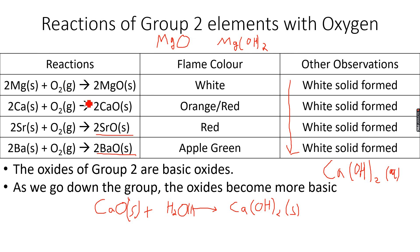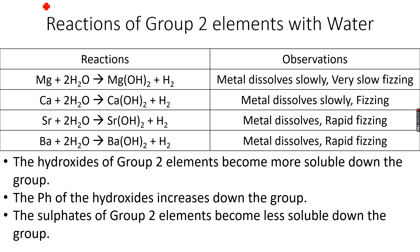All of these reactions with oxygen are exothermic combustion reactions, and the energy released increases down the group. This is because the reactivity of group 2 elements increases down the group. Barium is so reactive that it cannot be kept openly in air — it readily reacts with oxygen and must be stored under oil.